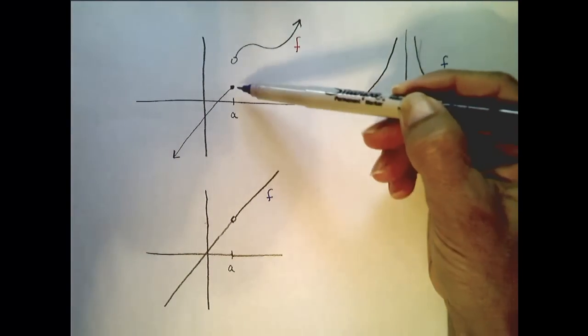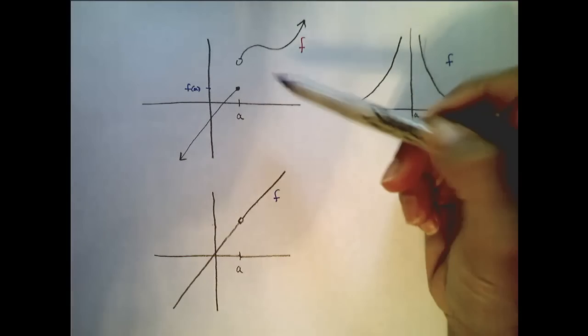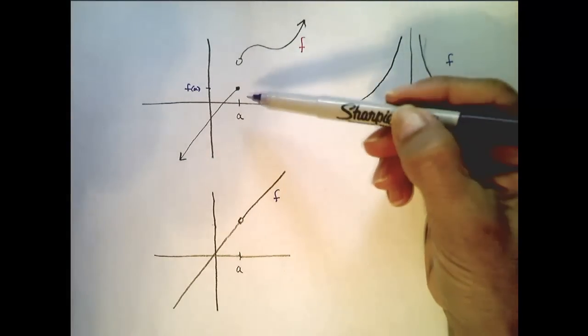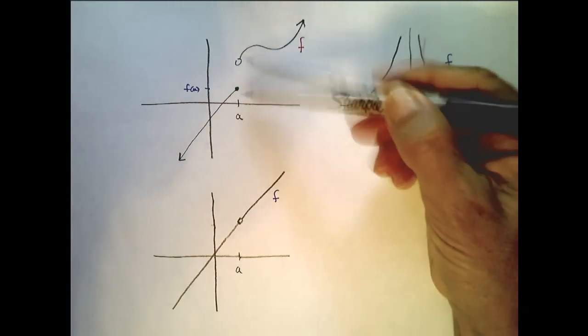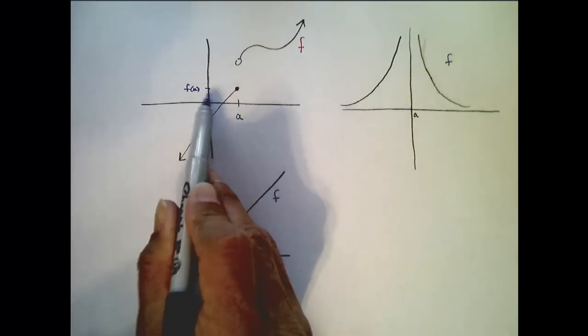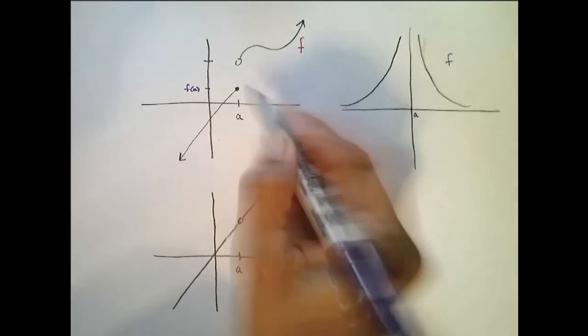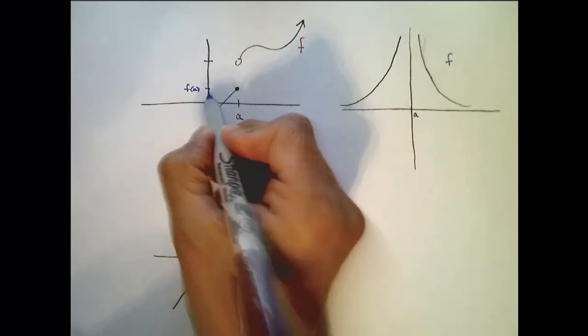So here, we see that f(a) is defined. So the first condition is met. However, there's this jump in the graph. The limit as x goes to a from the left is f(a), and the limit as x goes to a from the right is some other value not equal to f(a).